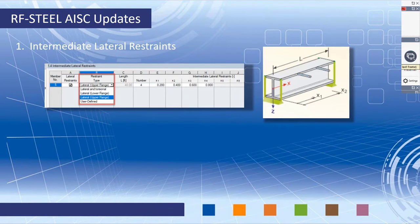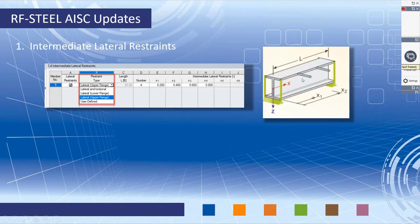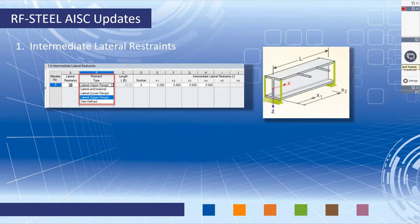Previously we only had the option to brace the top and bottom flange simultaneously for intermediate lateral restraints. Now, since we know as engineers that this isn't always the case — roof sheathing may only brace the top flange, or certain connection types may only brace the bottom flange — these options can now be individually set: upper only, lower only, or user-defined. We set the number of intermediate lateral restraints along the beam length. This is important for lateral torsional buckling so the program correctly identifies which flange is in compression to get the correct moment capacity.